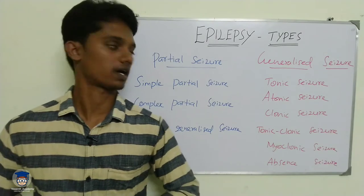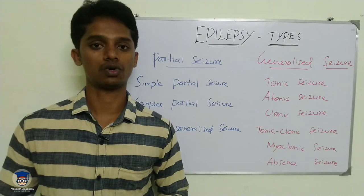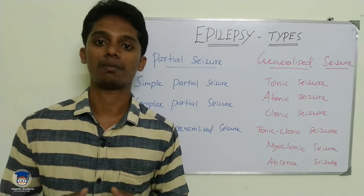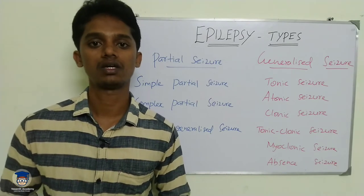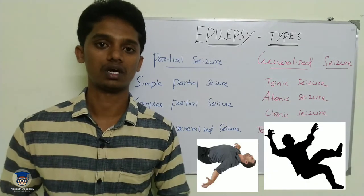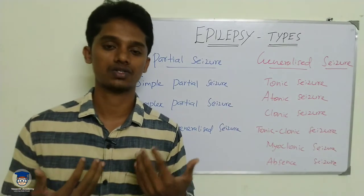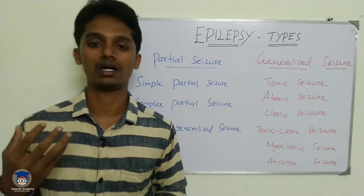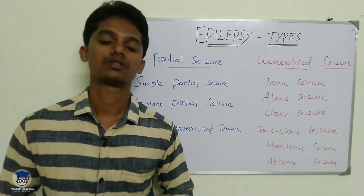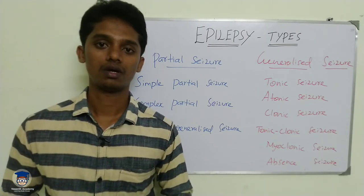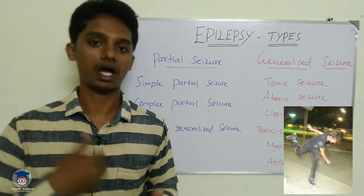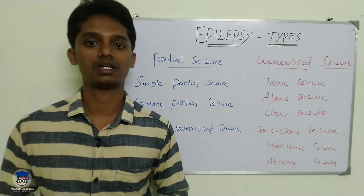For generalized seizures, the subtypes are as follows. First is tonic seizure — muscle tone is greatly increased, causing muscles to become completely rigid and stiff. The patient cannot make movements and will fall backward. After the tonic seizure, there may be loss of consciousness, headache, confusion, and even memory loss. Next is atonic seizure — this is the opposite of tonic. The muscles become very relaxed, and the patient loses all muscle tone and falls forward.